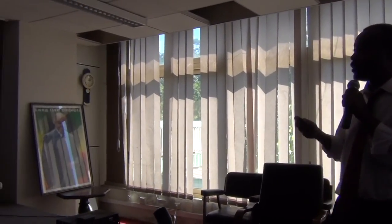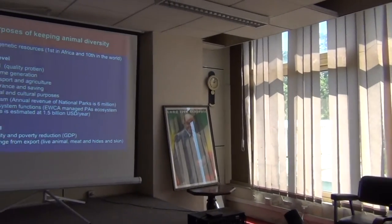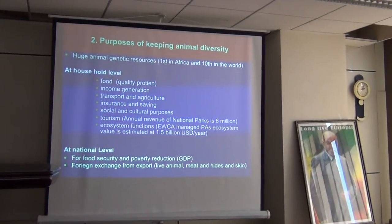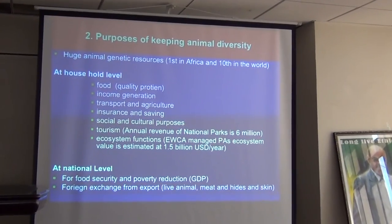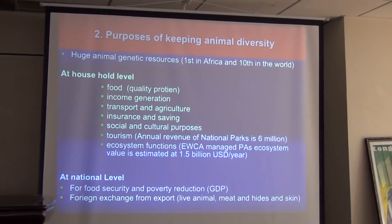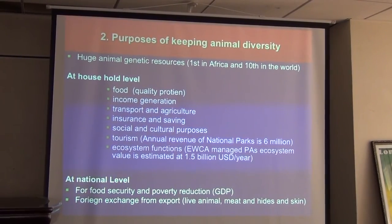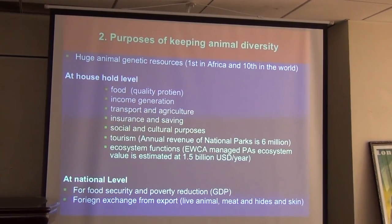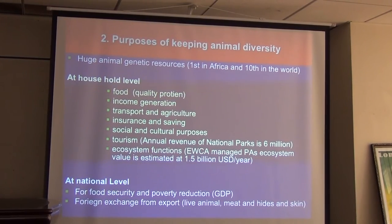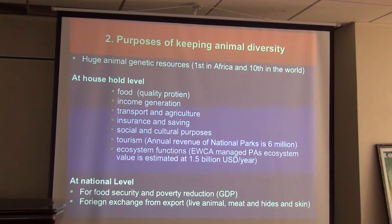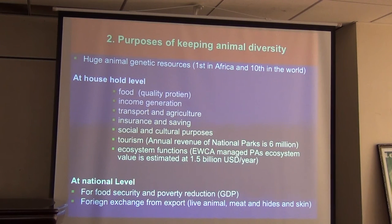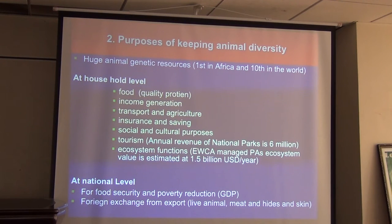We have huge animal genetic resources in the country. In Africa, we rank highly in livestock — for individual species like cattle, we are sixth in the world, and for donkeys, we are second in the world. These animal genetic resources have immense, multifaceted roles through the entire food chain, at both household and national level.